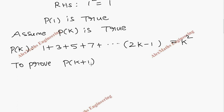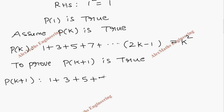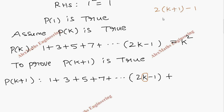Now we have to prove P of k plus 1 is true. P of k plus 1 becomes: 1 plus 3 plus 5 plus 7 plus dot dot dot 2k minus 1, then the next term — where k becomes k plus 1 — we substitute k plus 1 to get 2 times (k plus 1) minus 1, which is 2k plus 2 minus 1, giving us 2k plus 1. On the right hand side it is (k plus 1) whole squared.